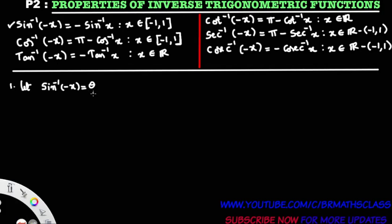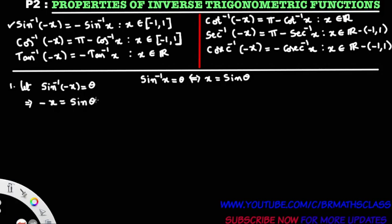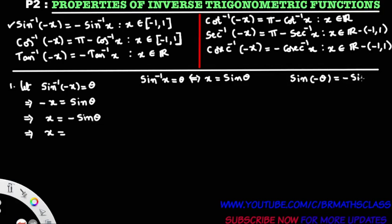Let sin inverse of minus x equal to theta. From the definition of inverse sine function, we can write minus x equals to sine theta. Multiply with minus on both sides — you will get x equals to minus sine theta. In trigonometry, we learn that sine of minus theta is minus sine theta.